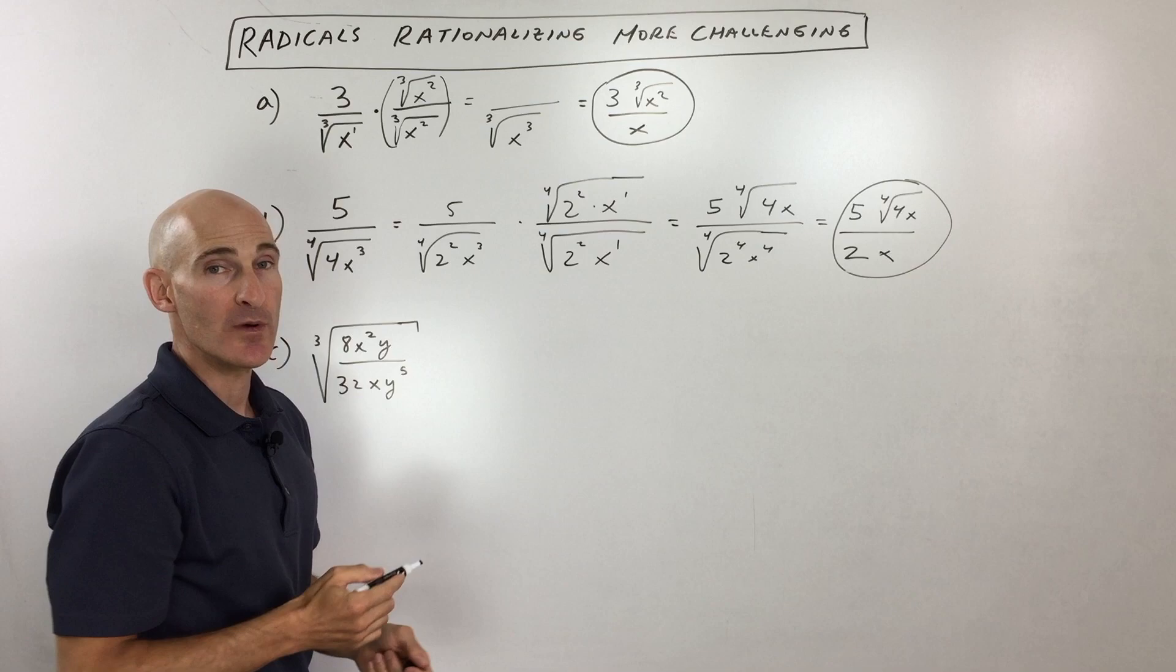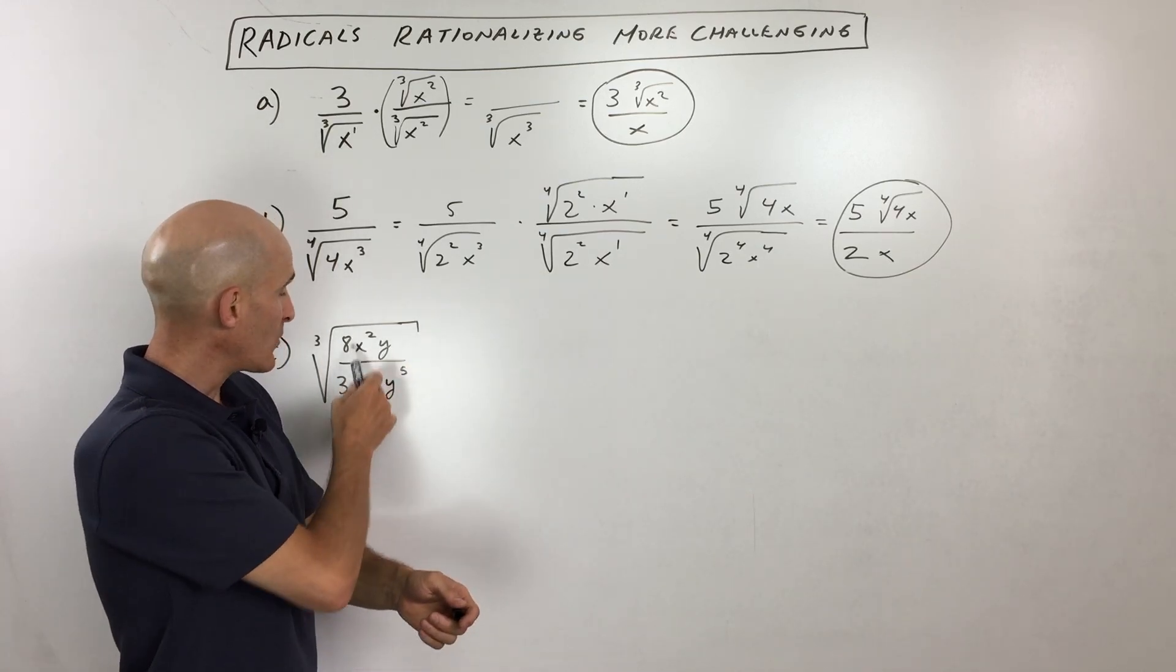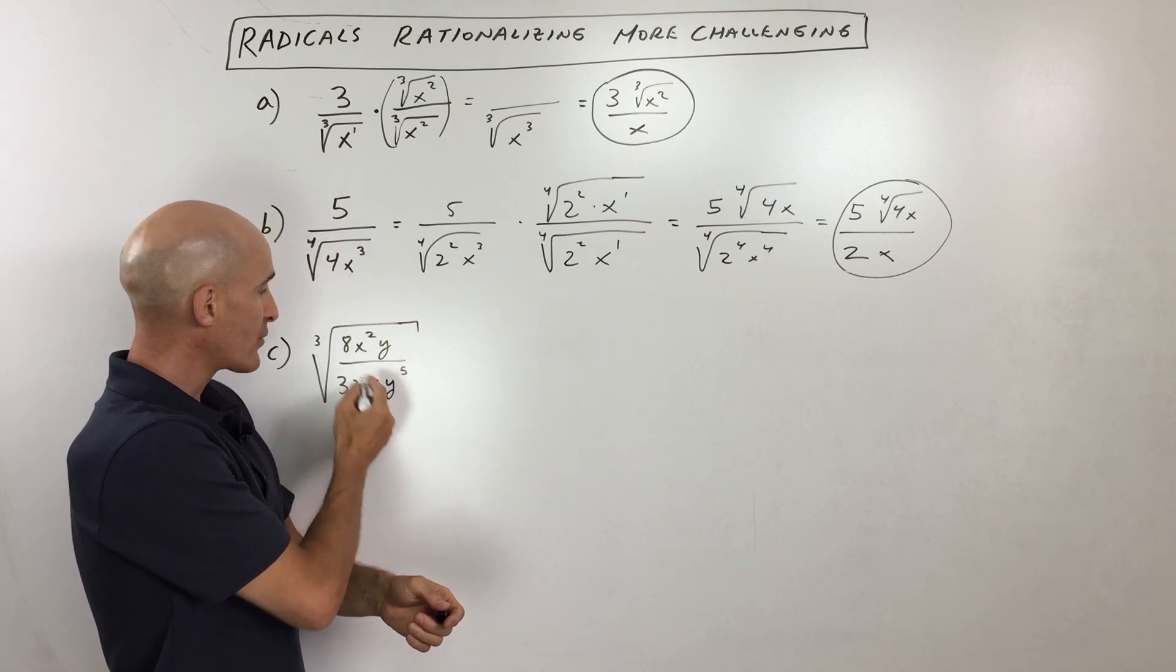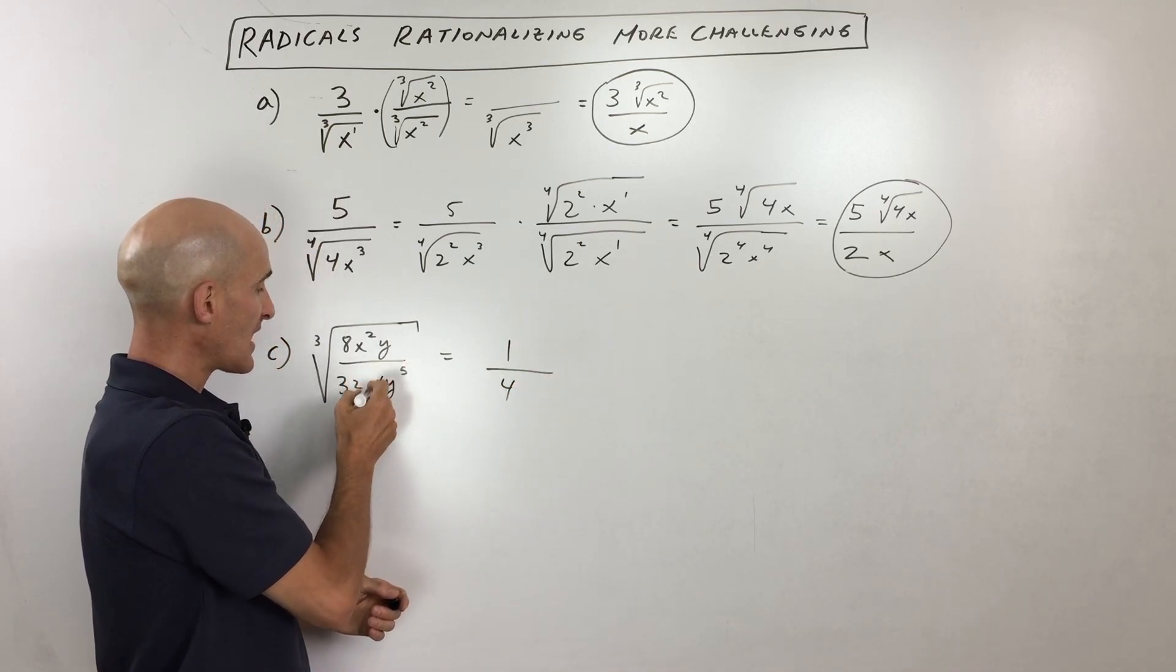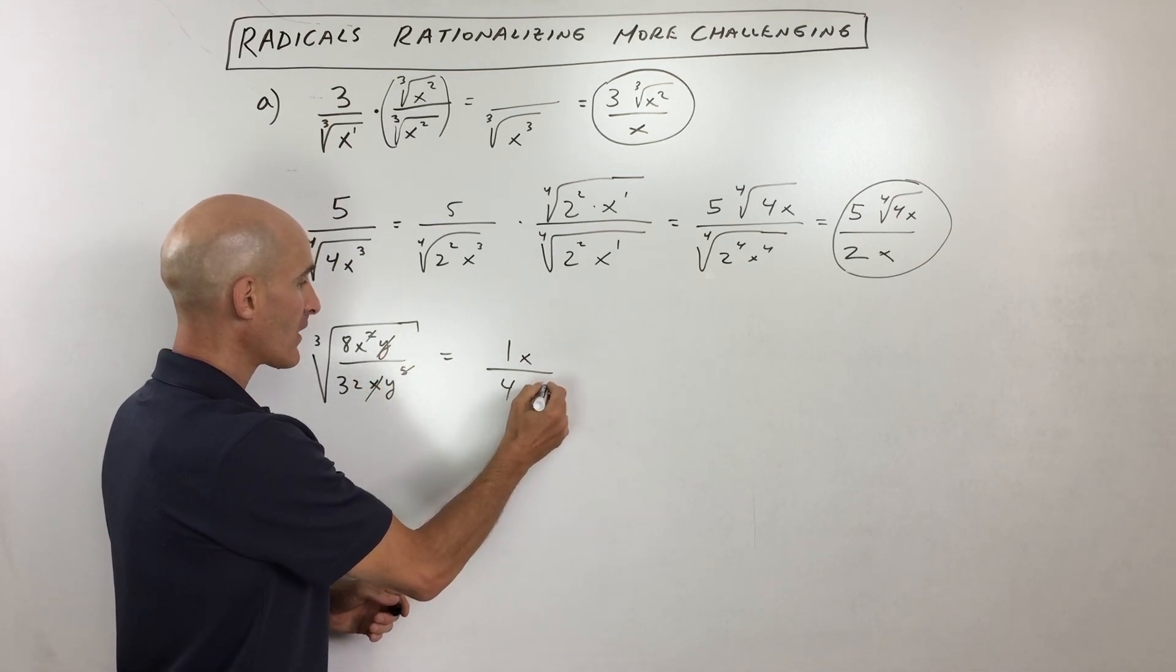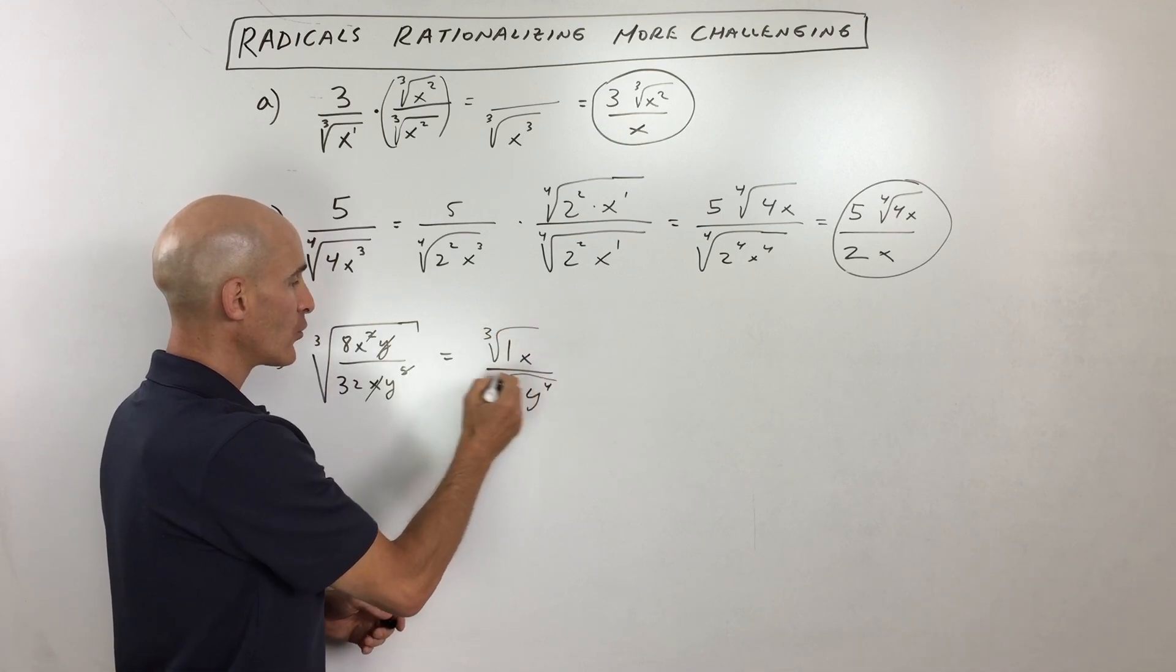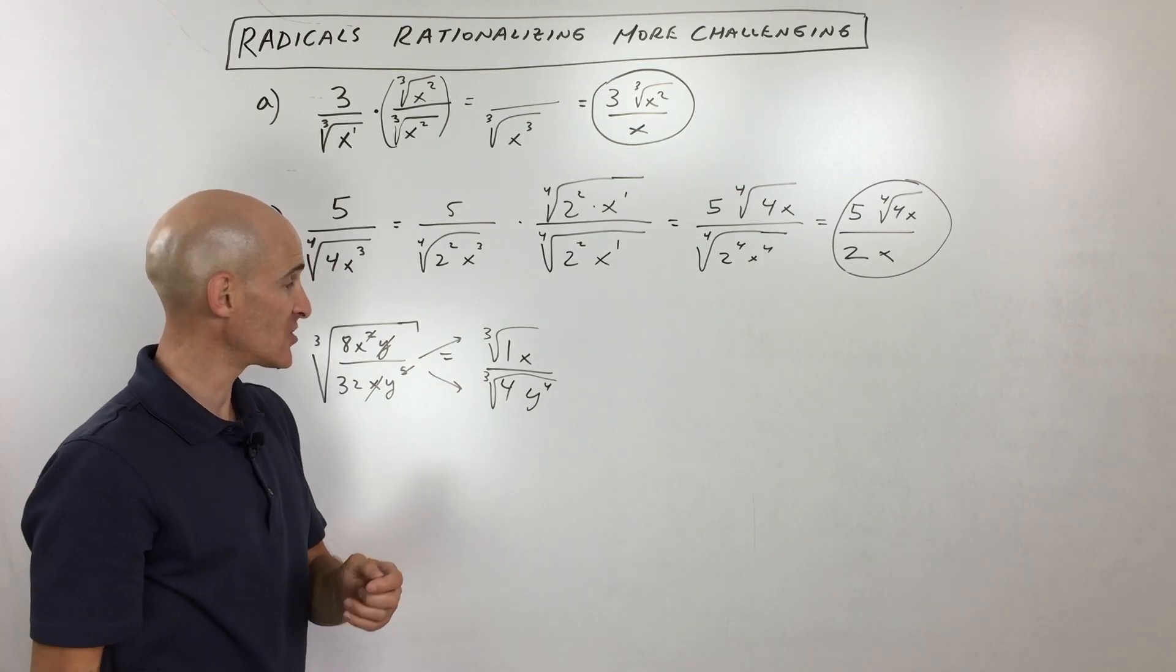Okay, last example, here we're dealing with the cube root. Now what I would do in a situation like this, where this whole thing is underneath the cube root, is I would try to reduce first. So what I mean by that is, see the 8 and the 32? You can reduce that to one-fourth. One of these x's cancels with one of these x's, so that's just going to be x, and then one of these y's cancels with one of these, leaving 4 left over in the denominator. So now what we're looking at is the cube root, and notice I'm splitting this up into the cube root of the numerator divided by cube root of the denominator.